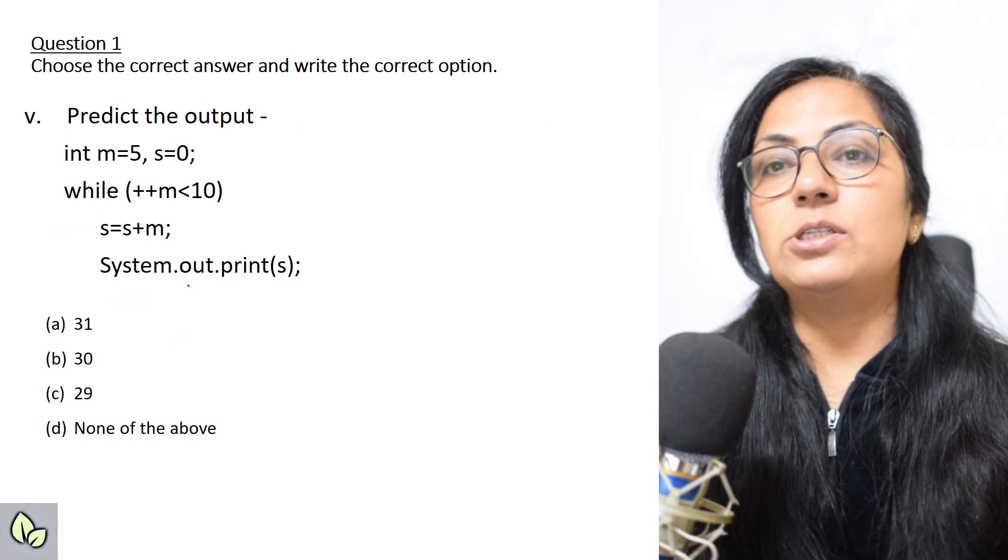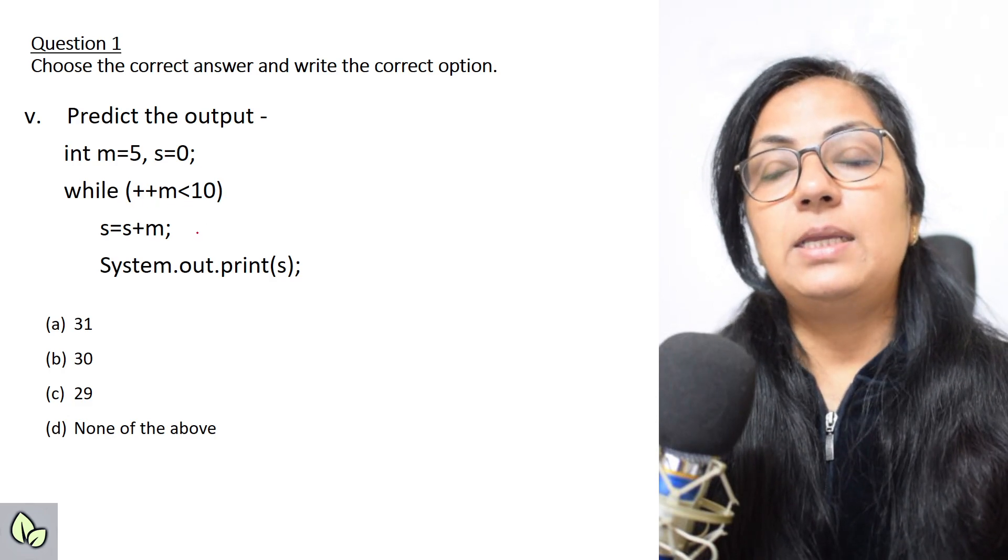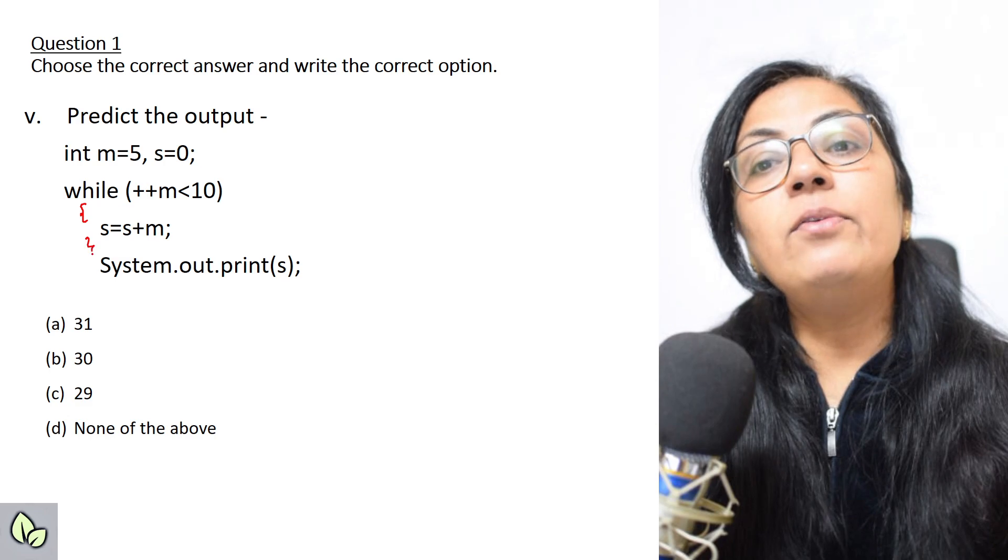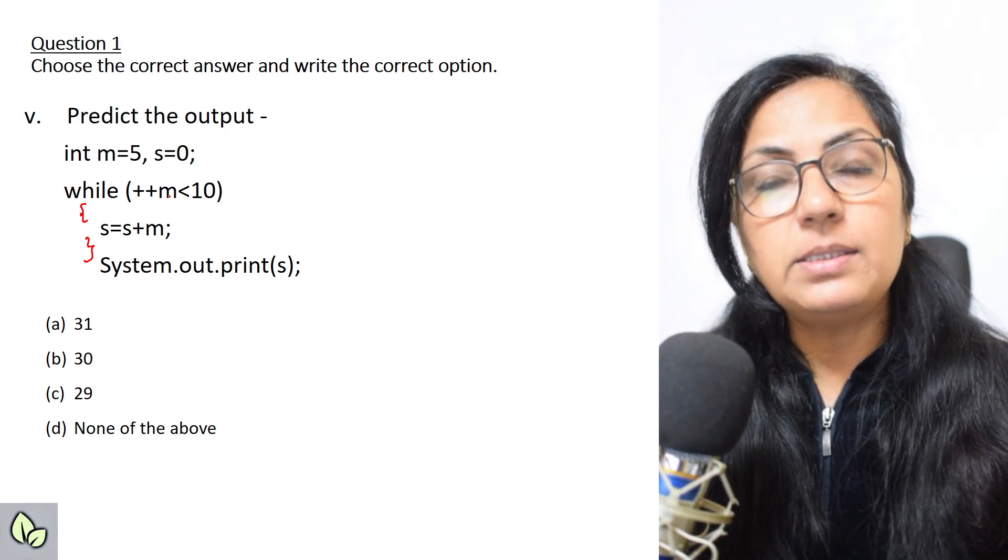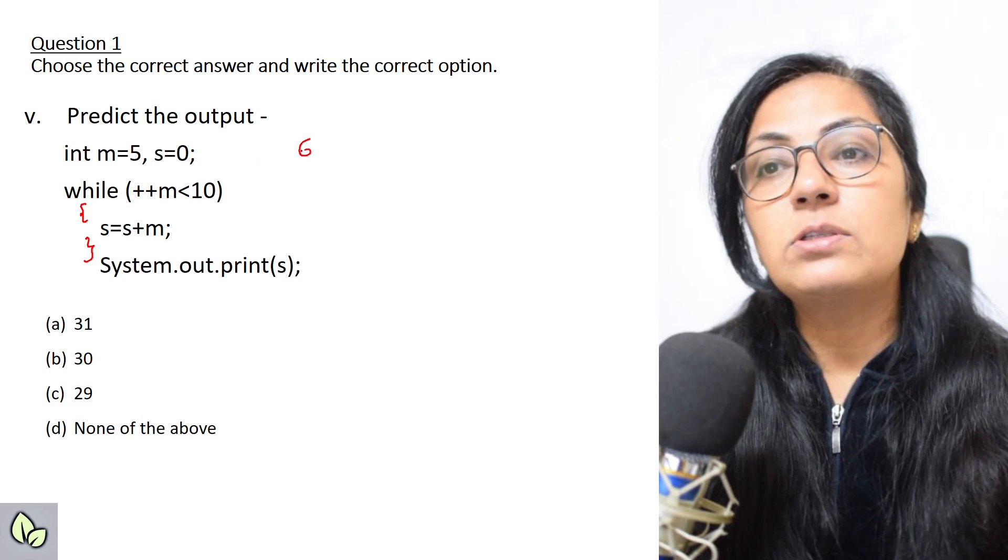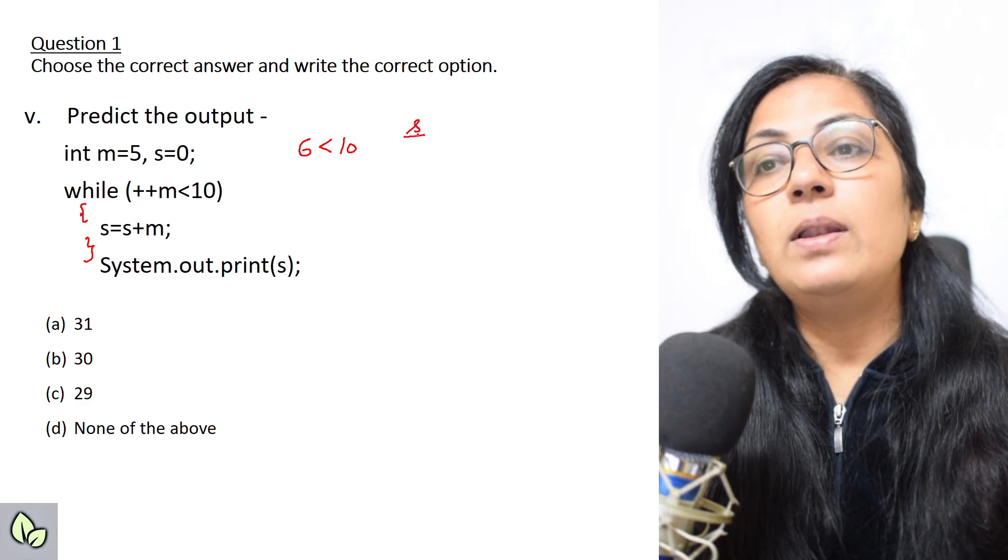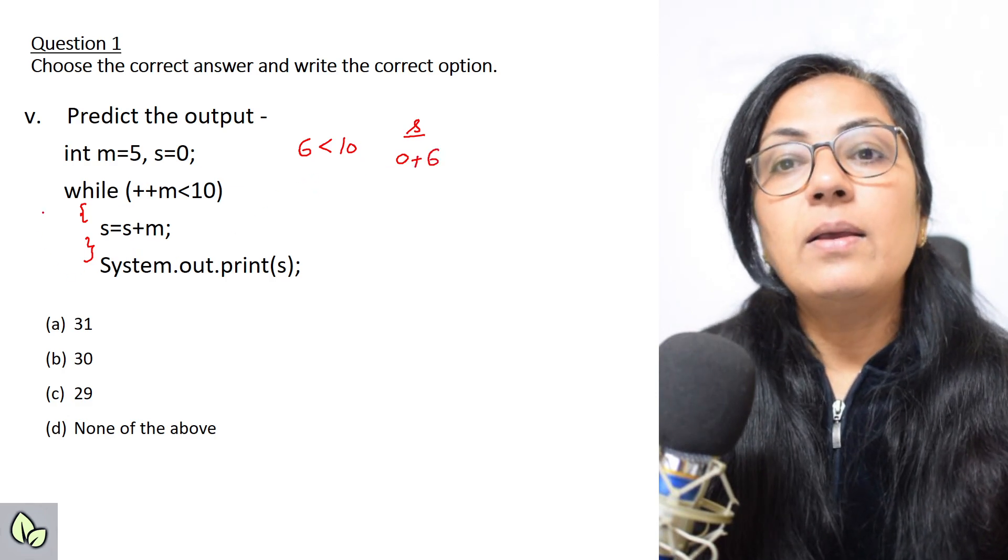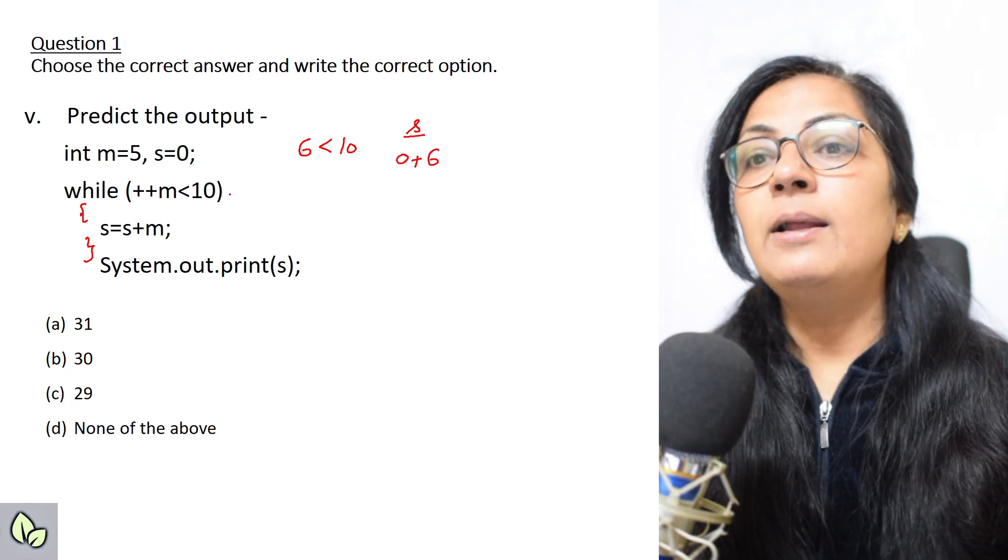Give the output: int m equals 5, s equals 0, while plus plus m less than 10. Here, if you notice, the curly braces are not given for this while block, so we will assume only one statement. Put the curly braces yourself for better calculation. Plus plus m, this is pre-increment operator. First time it will increase the value before checking the condition. So 6 less than 10, condition is true. S equals s plus m, the value of s will be 0 initially, plus m which is now 6.